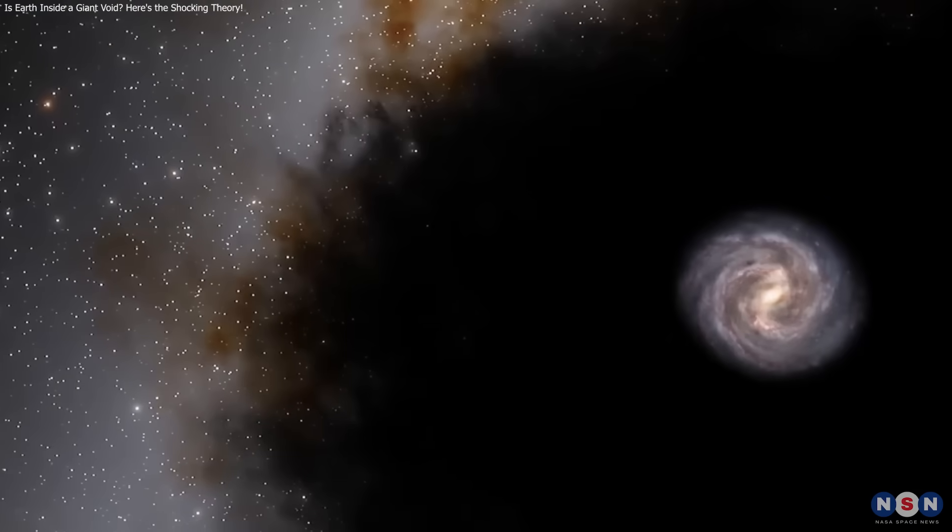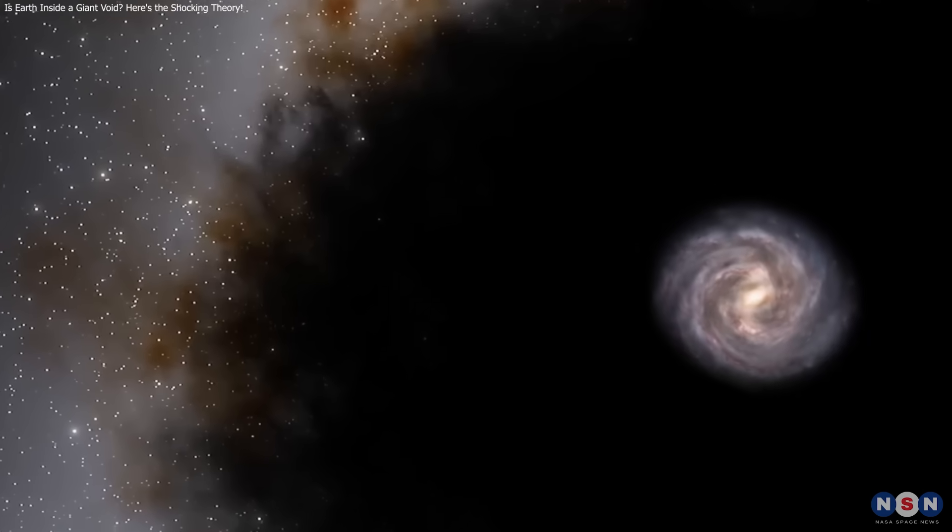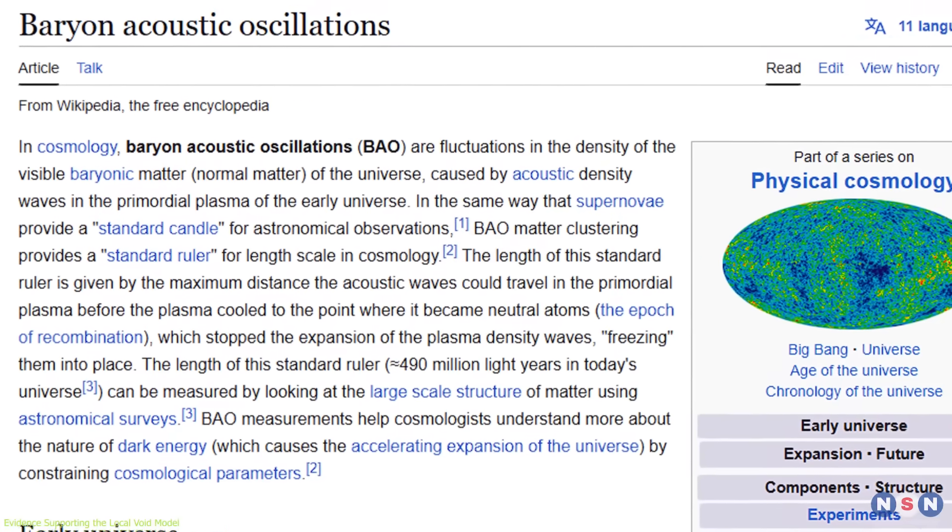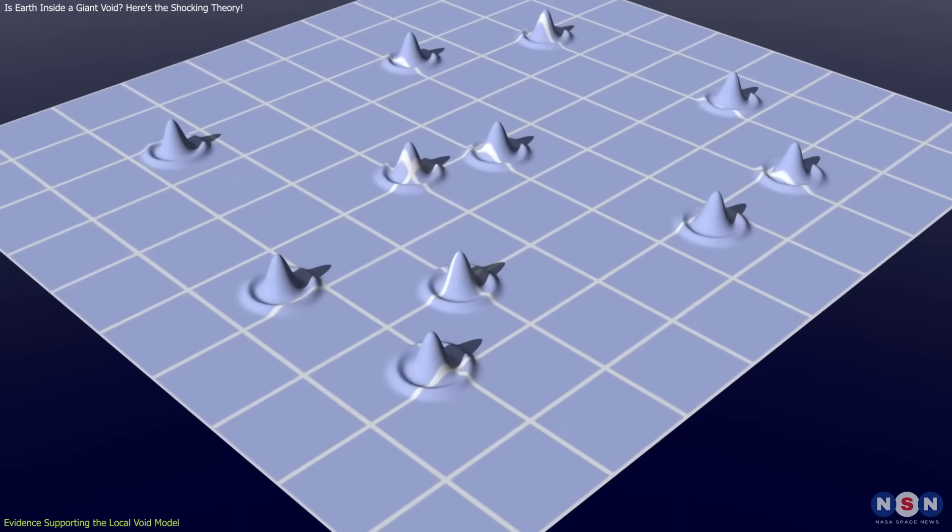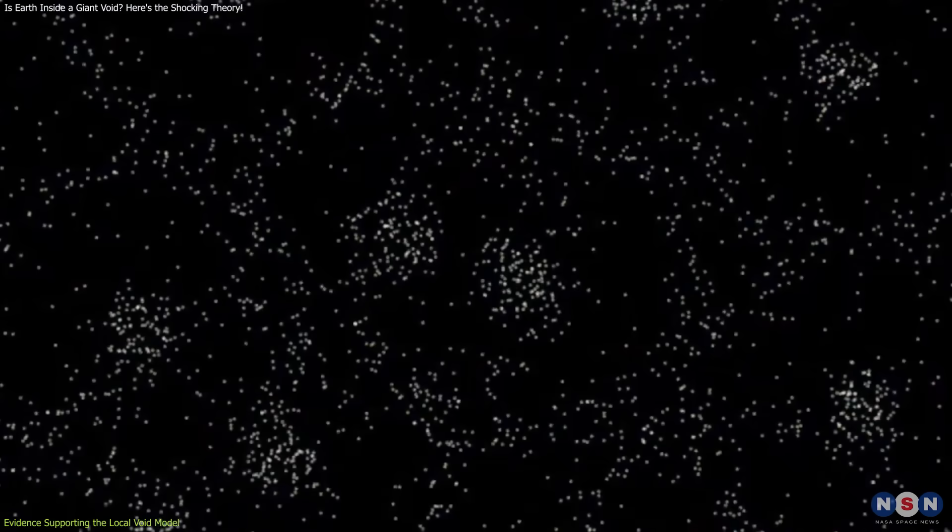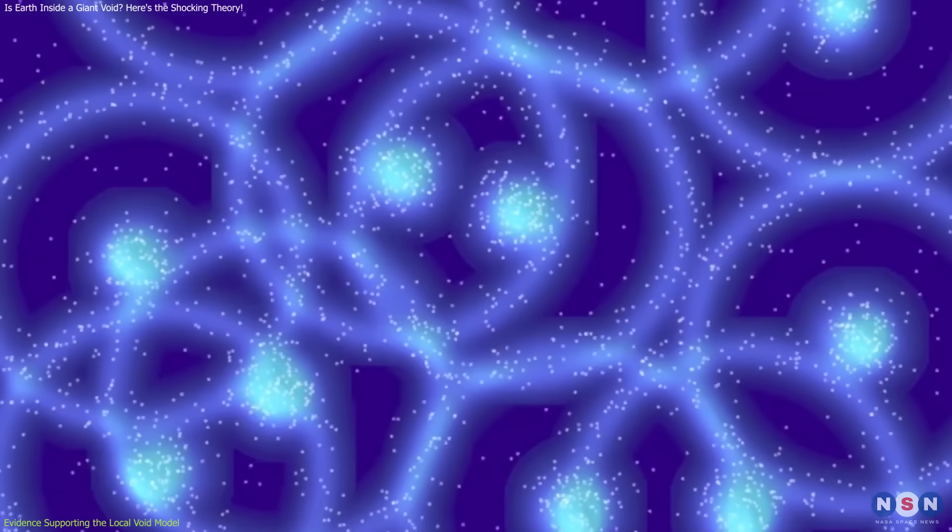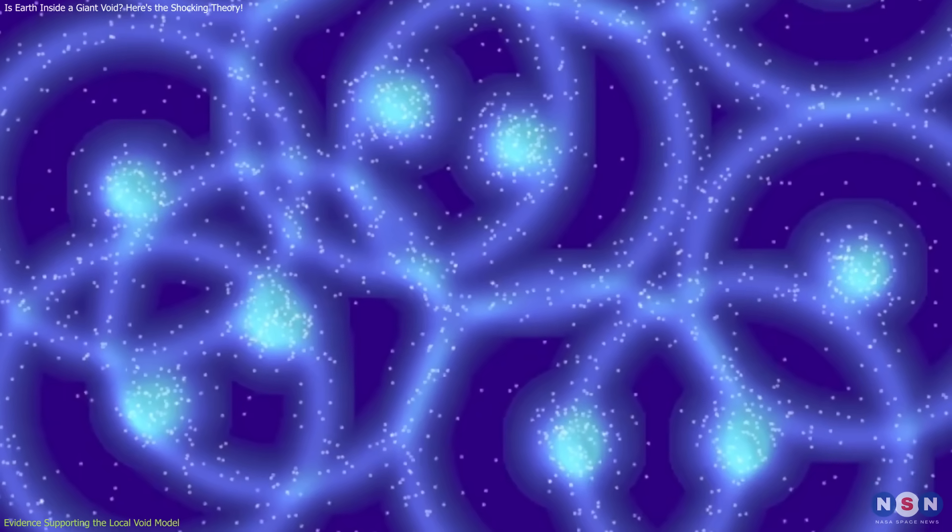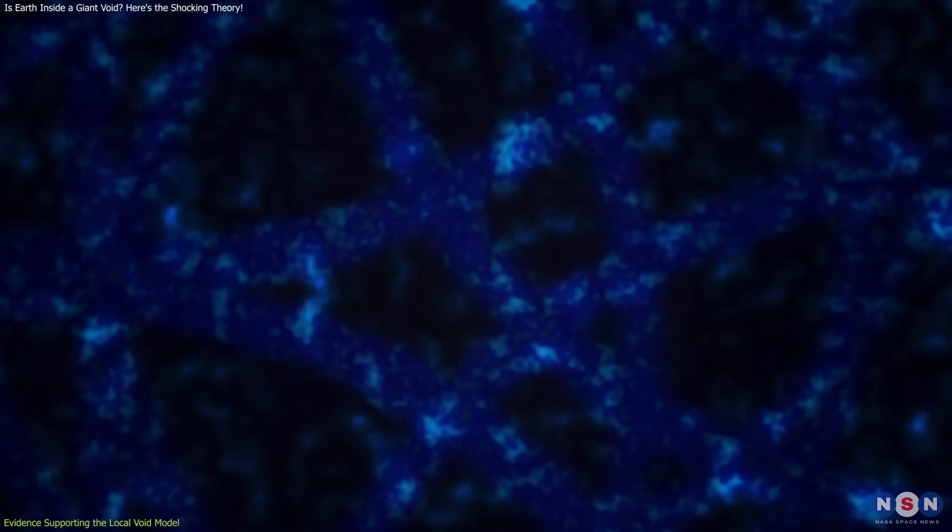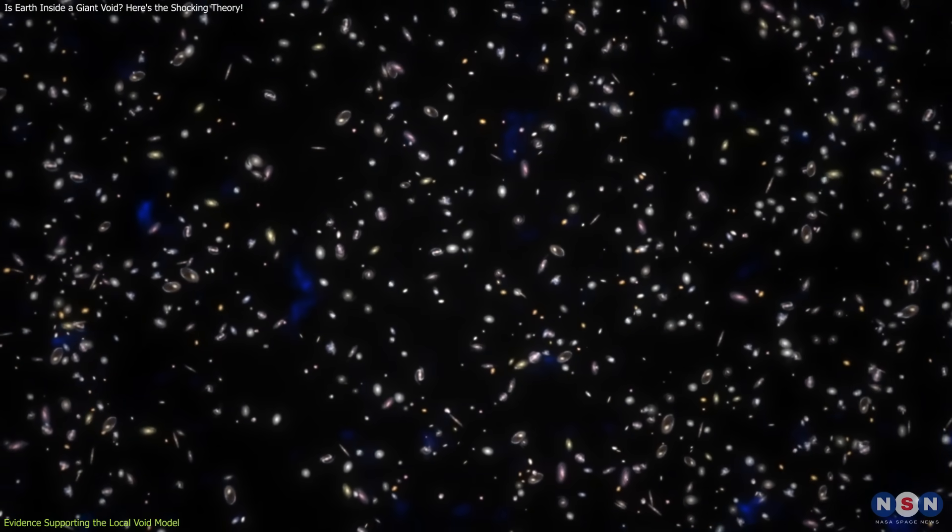To support this hypothesis, Dr. Bannick and his team turned to Baryon Acoustic Oscillations, or BAOs. BAOs are the sound waves from the early universe that were imprinted in the distribution of galaxies. These sound waves were frozen in place as the universe cooled and expanded, leaving behind a cosmic ruler that can be used to measure the expansion of the universe.